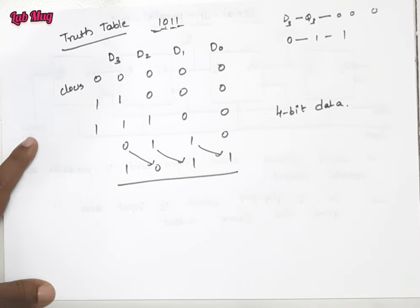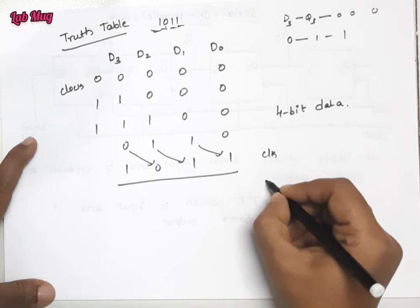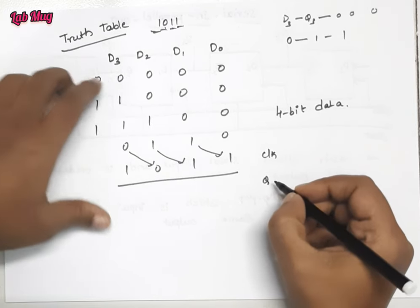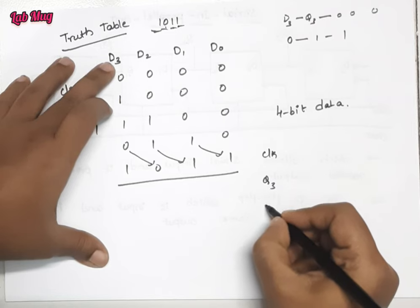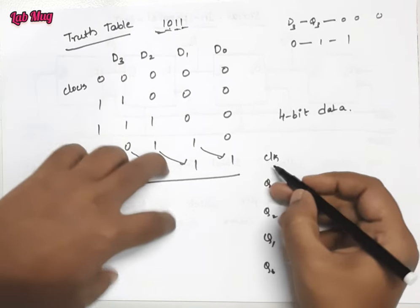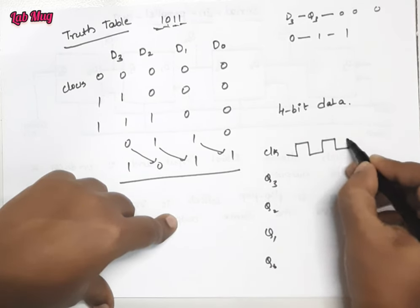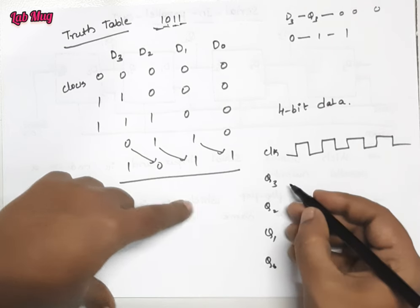Then for this, the waveform diagram contains the same clock, and then in D3 one input, in output Q3, Q2, Q1 and Q0. Clock is simple like this, and Q3...